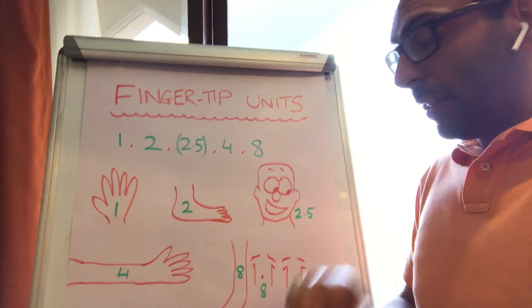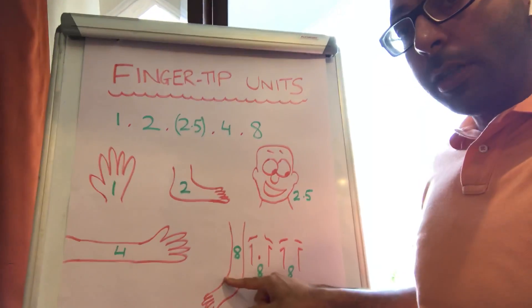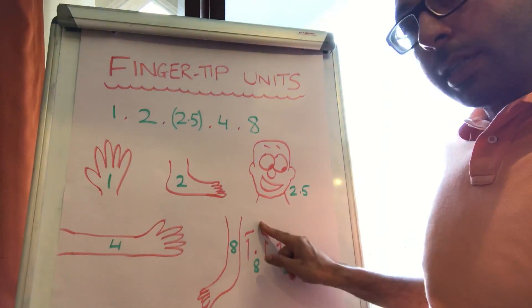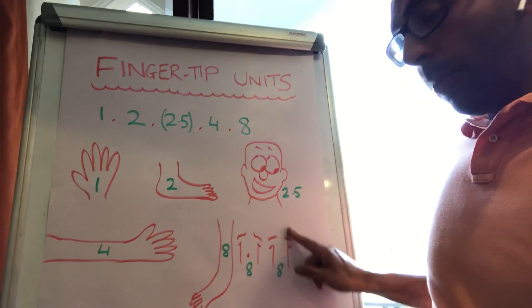And eight fingertip units can cover three different things. Eight will cover a leg and someone's foot. Another eight will cover someone's front. And another eight will cover someone's back.